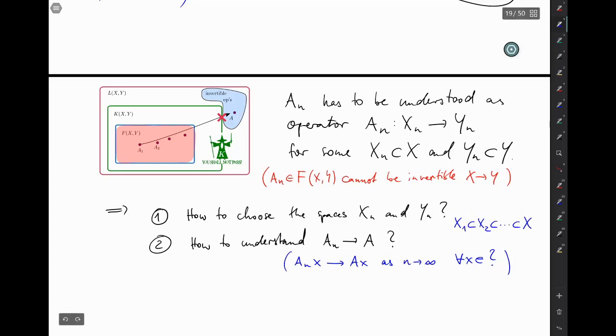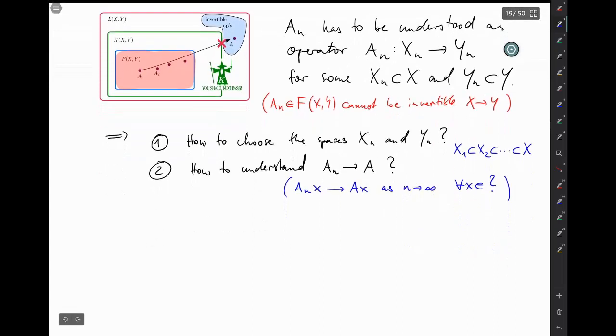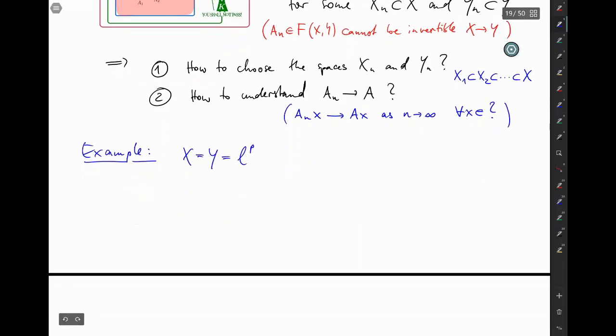So let's do what we often do when we don't know how to proceed. Let's start with an example, and for this example let's take x and y the same, which is just one of our sequence spaces little lp, in which case we can think of the equation ax equals b as an equation of an infinite matrix applied to an infinite vector being equal to another infinite vector.